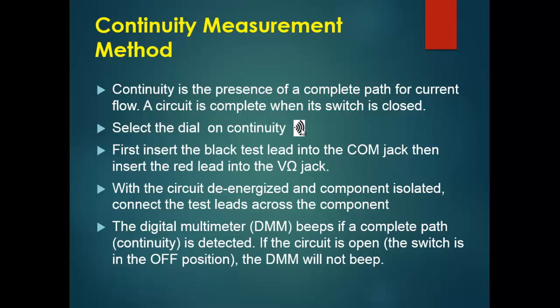Continuity is the presence of a complete path for current flow. To check whether a circuit is complete or closed, we use a continuity test. First, select the dial on continuity — represented by this symbol, which is normally placed near the resistance setting. When you see this symbol appear on the LCD, the multimeter is in continuity mode.